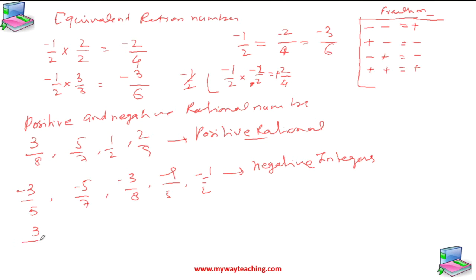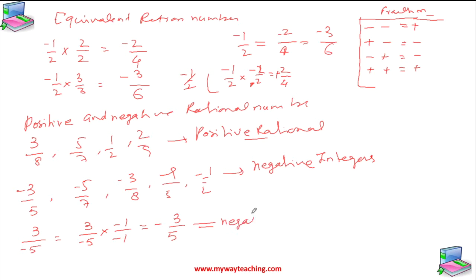One of my students asked: for 3 over minus 5, what is positive and negative? Because minus 3/5 is normally written as 3 over minus 5. If we multiply by minus 1 over minus 1, then minus × minus gives positive in the denominator, and minus in the numerator stays, so it comes minus 3/5. So minus 3/5 is indeed a negative rational number.